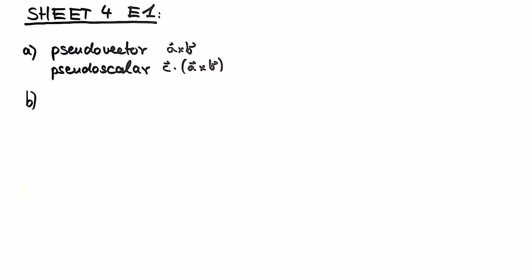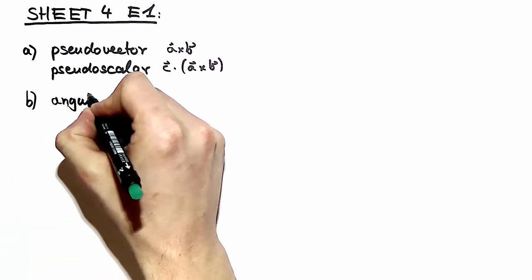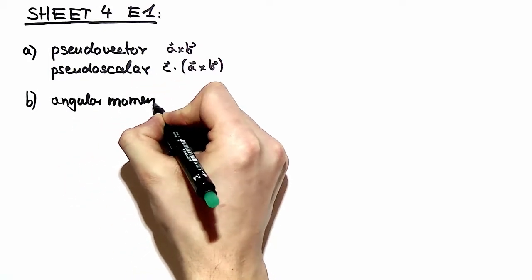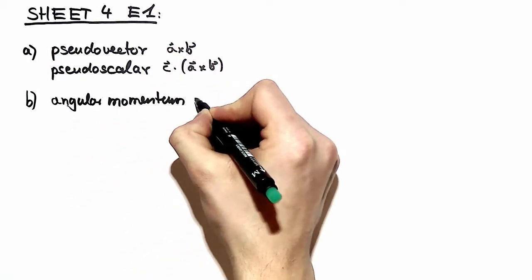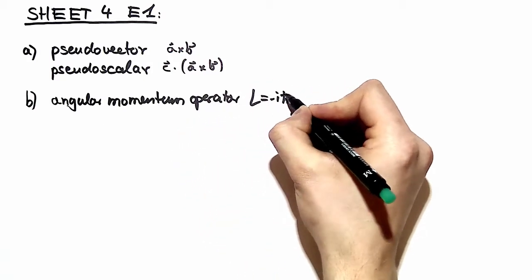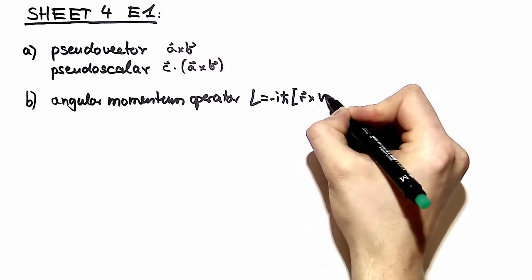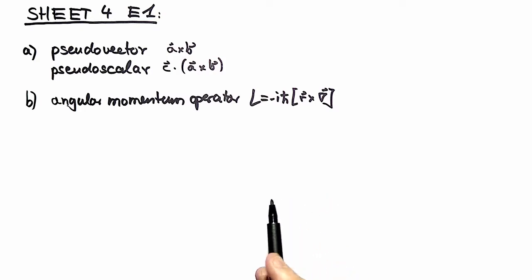In part b, we want to find an operator which consists of a pseudovector, so it consists of a cross product. The first operator we can think of is the angular momentum operator, which is defined as minus i h bar r cross nabla.